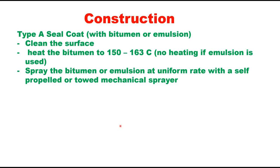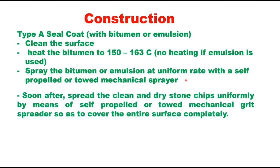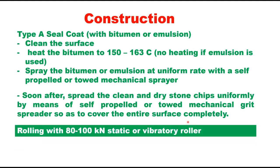Construction of Type A seal coat involves 3 to 4 steps: first, clean the surface. Heat the bitumen to 150 to 160°C (no heating required if emulsion is used). Spray the bitumen or emulsion at a uniform rate with a self-propelled or towed mechanical sprayer. Soon after, spread clean and dry stone chips uniformly by means of a self-propelled or towed mechanical grit spreader so as to cover the entire surface completely. Then compact with an 80 to 100 kN static or vibratory roller.